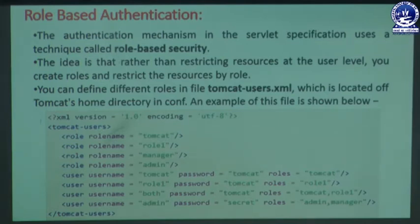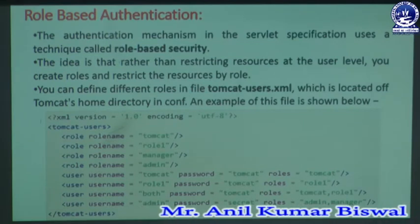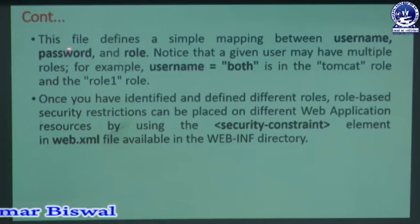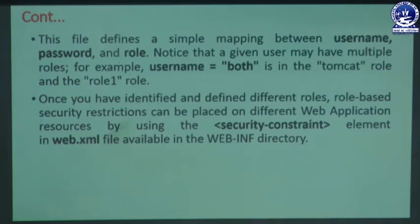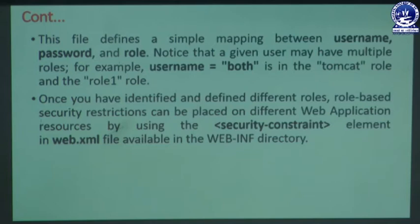This file defines a simple mapping between username, password, and role. In the previous slide we already described the three parts: username, password, and role. Note that a given user may have multiple roles — for example, username 'both' is in both the 'tomcat' role and the 'role1' role. We have roles named tomcat, role1, manager, and admin helping to set the JSP page.